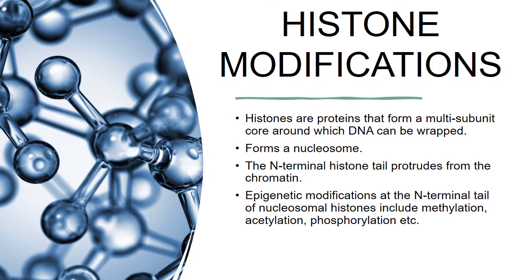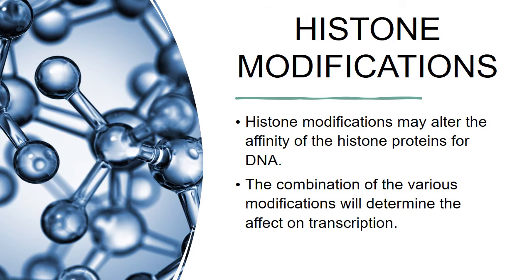Epigenetic modifications at the N-terminal tail of nucleosomal histones include methylation, acetylation, phosphorylation, and a few others. Many of these processes are catalyzed by enzymes, and some enzymes may also catalyze the removal of a protein, and histone deacetylation is common in certain malignancies. Histone modifications may alter the affinity of the histone proteins for DNA. They may also result in recruitment of other proteins that affect chromatin compaction, and it is various combinations of modifications that will determine the effect on transcription.